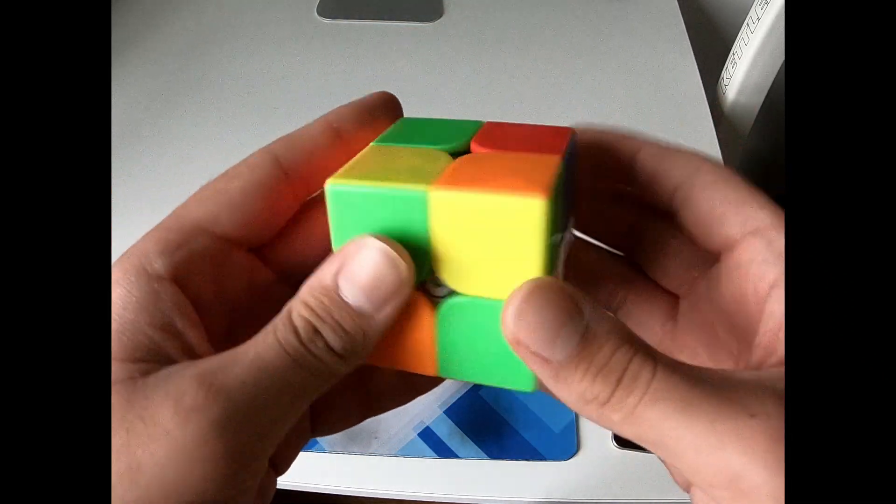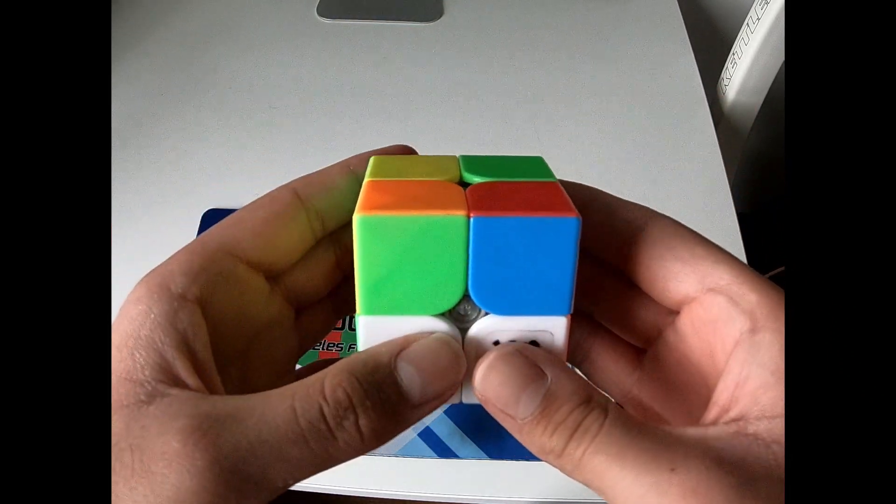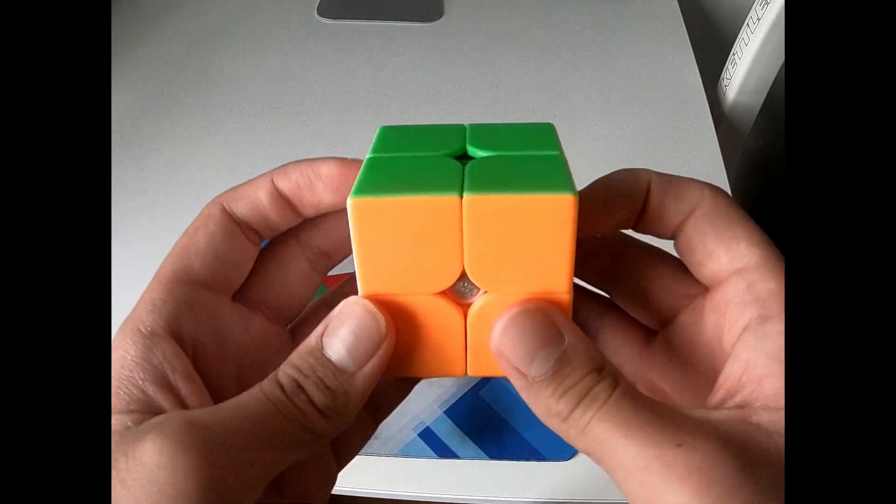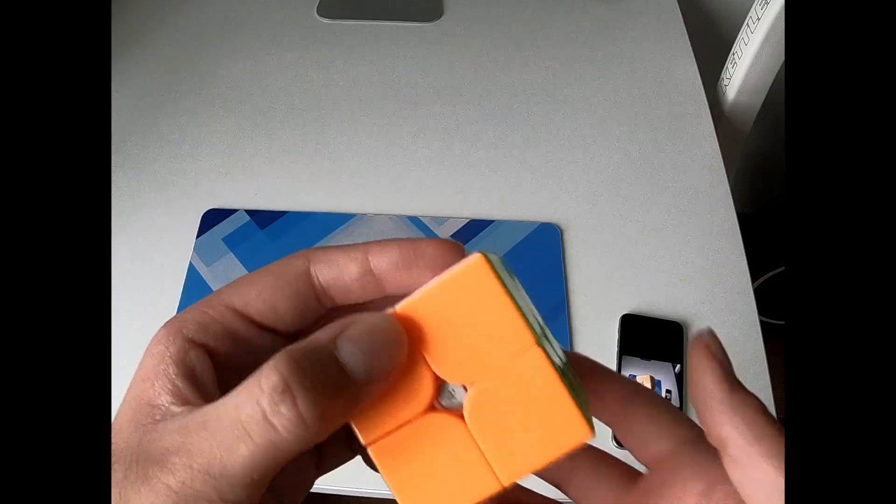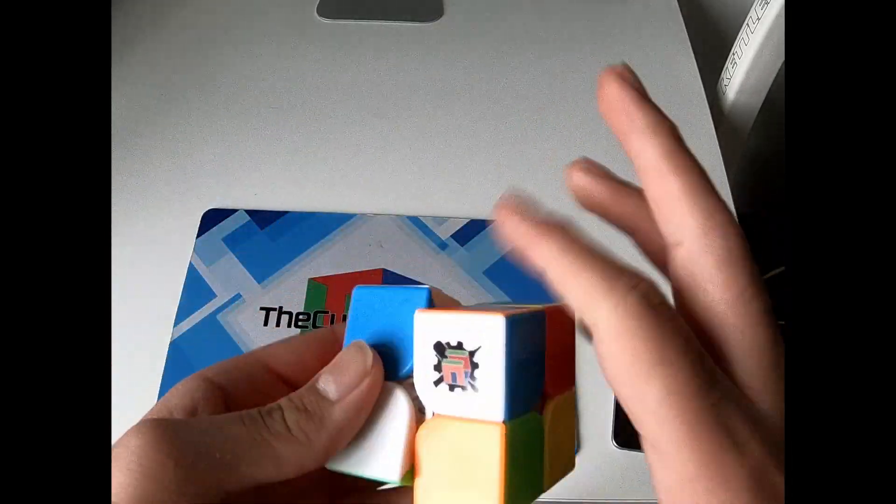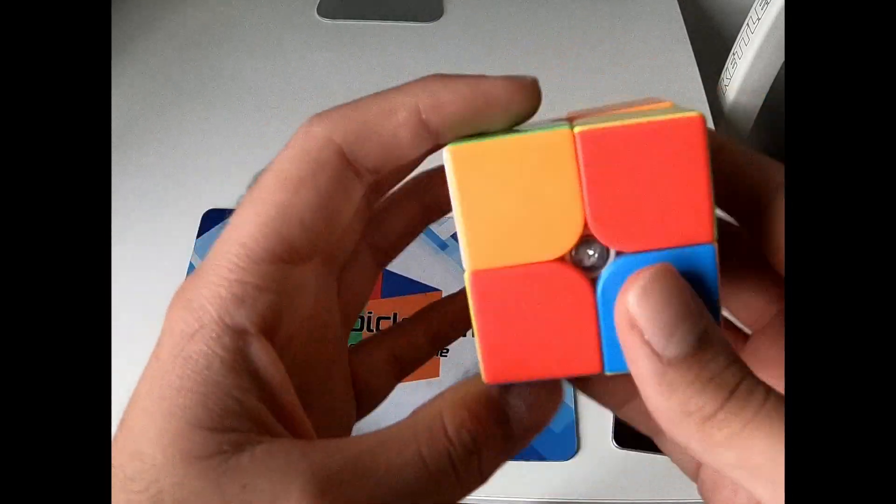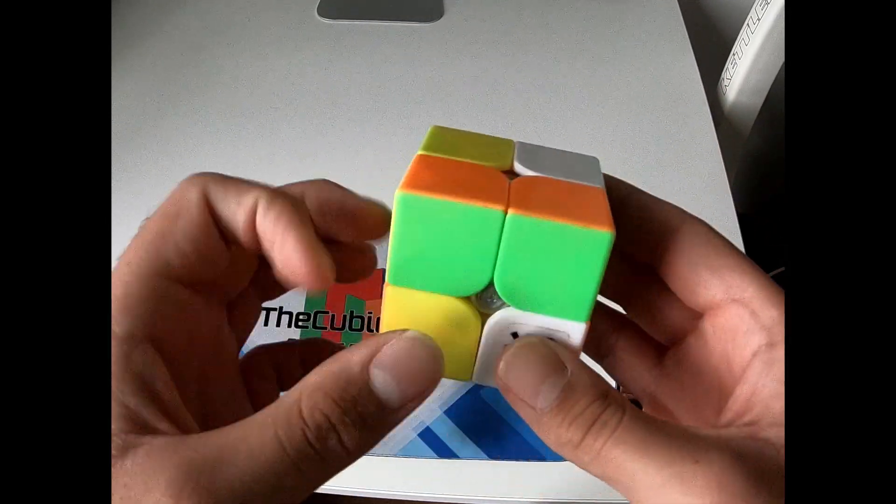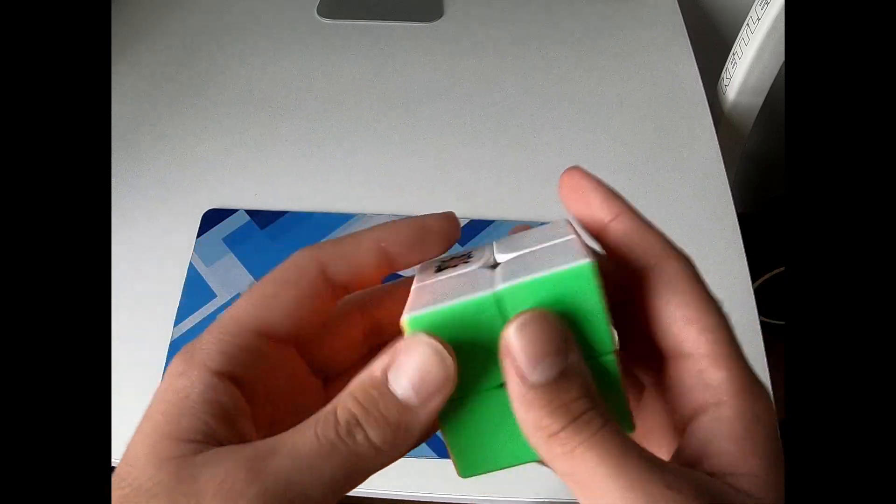So I would just hold it like this and just do U2. And that would also give me no AUF. So it's just U2 L' U2. That easy EG1 with no AUF.